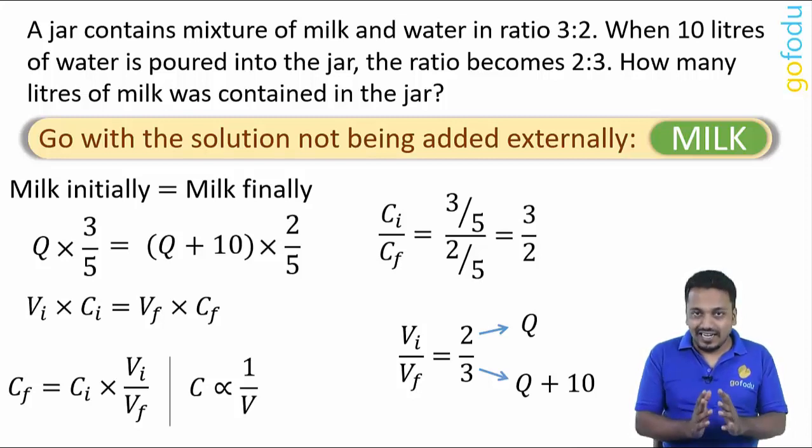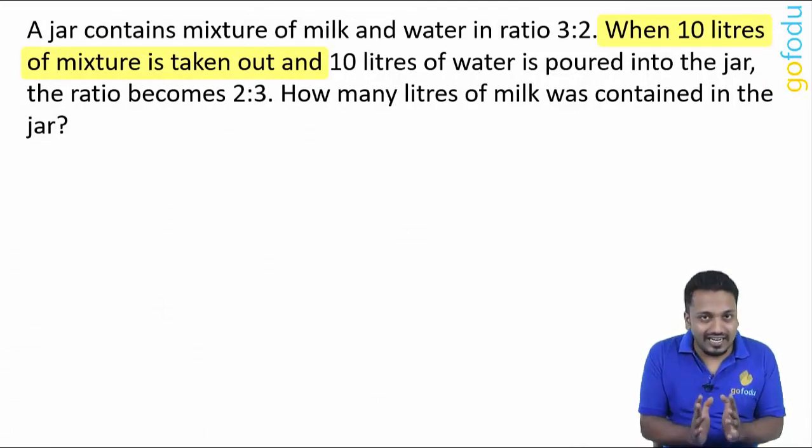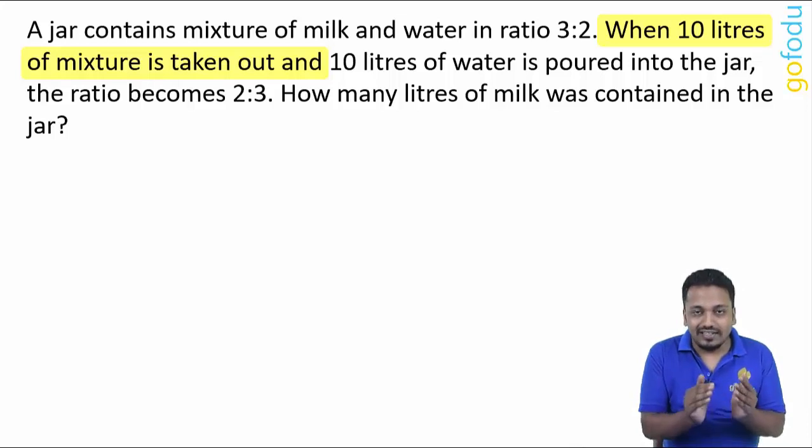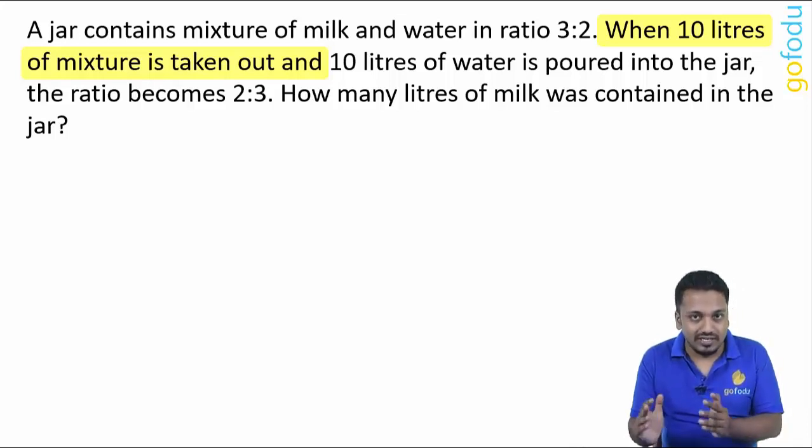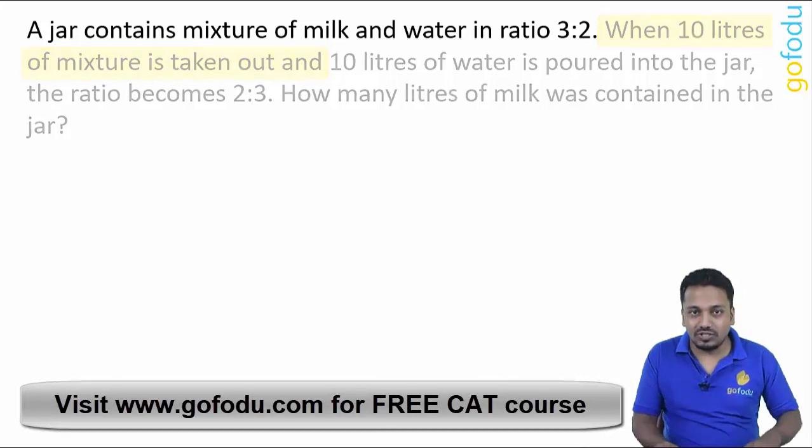Now a little addition to this question. One extra line is added here. Now initially 10 liters of mixture is taken out and then it is replaced with water - in place of mixture, 10 liters of water is added. It is a 2 step process now.